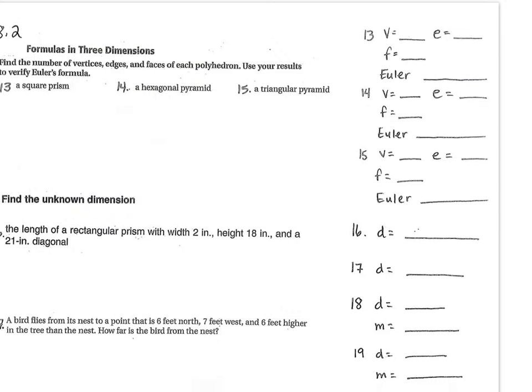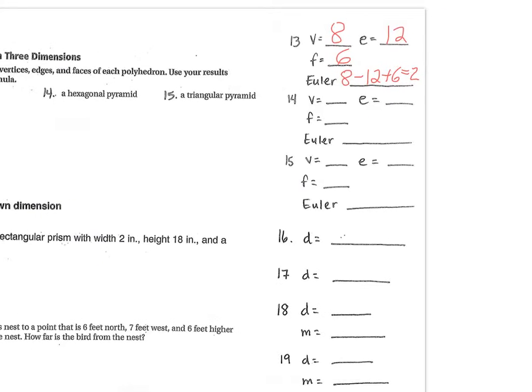What was the answer? Vertices - how many vertices in a square prism? 8. How many edges? 12. And faces? 6. And when you apply Euler's, that would be 8 minus 12 plus 6, and that equals 2, and then you just put a check mark. It checks, so that is right.